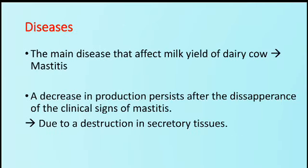The next factor is disease. The main disease that affects the milk yield of dairy cows is mastitis. A decrease in production persists even after the disappearance of clinical signs of mastitis, due to the destruction of secretory tissues.